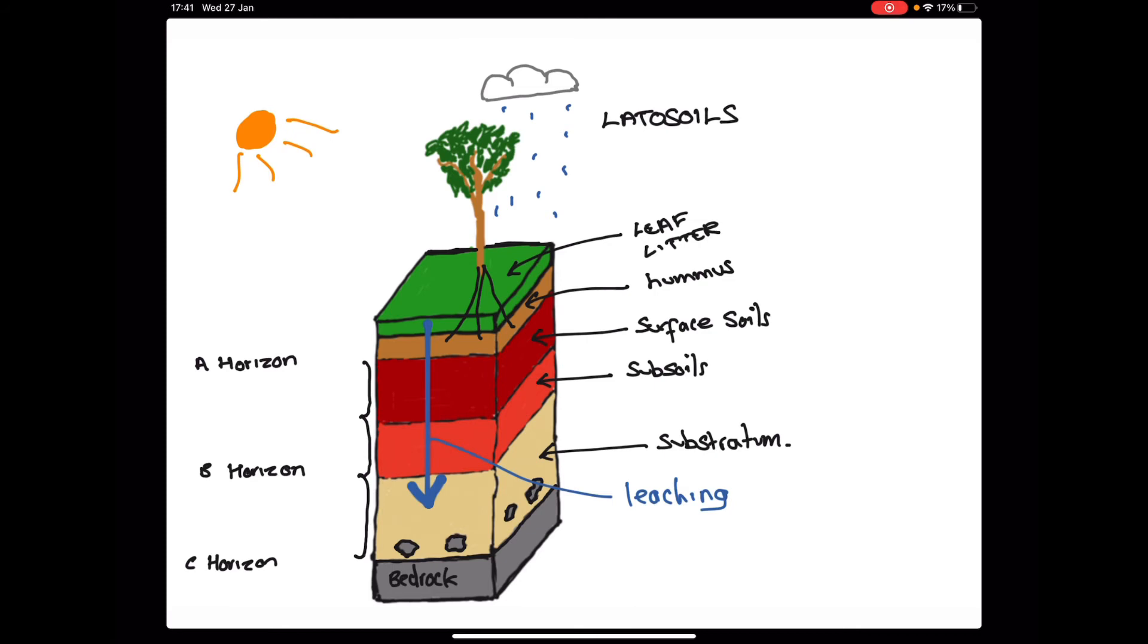Leaching occurs by virtue of the high levels of precipitation in the tropical rainforest. With significant amounts of rain every day throughout the year, water is continuously passing down through the soil, taking nutrients with it. The heavy metals such as iron and aluminium remain in the upper layers, giving it its characteristic red color.